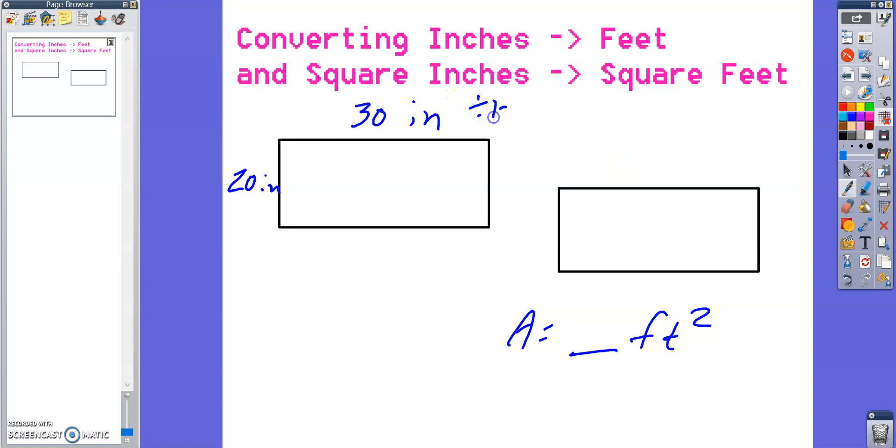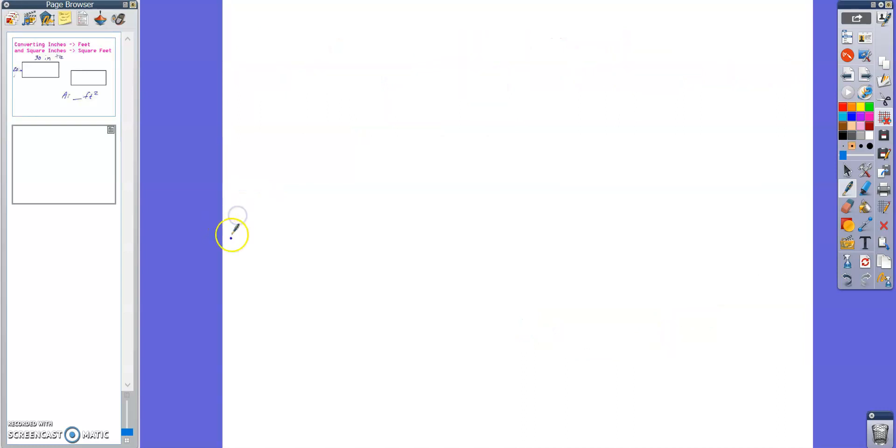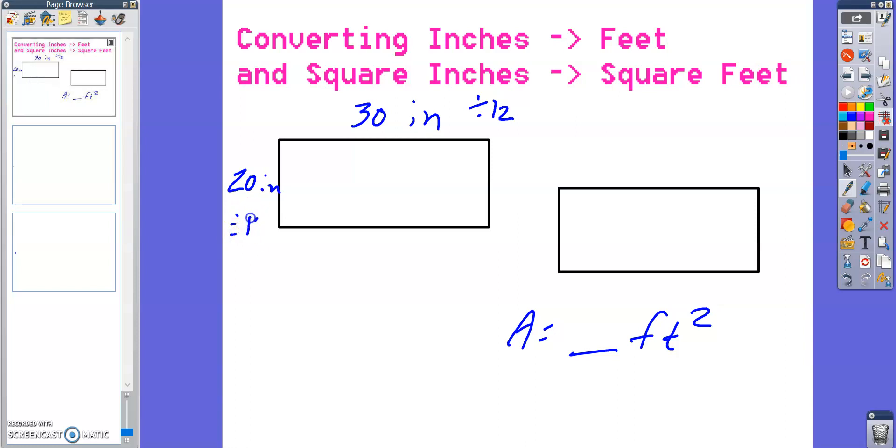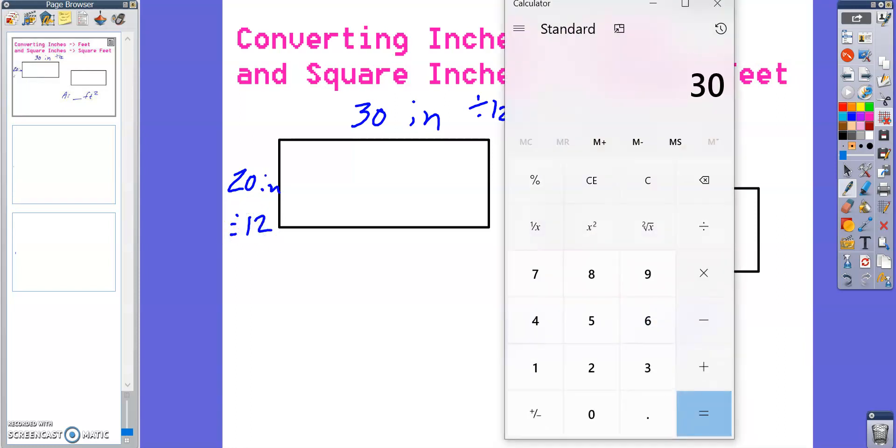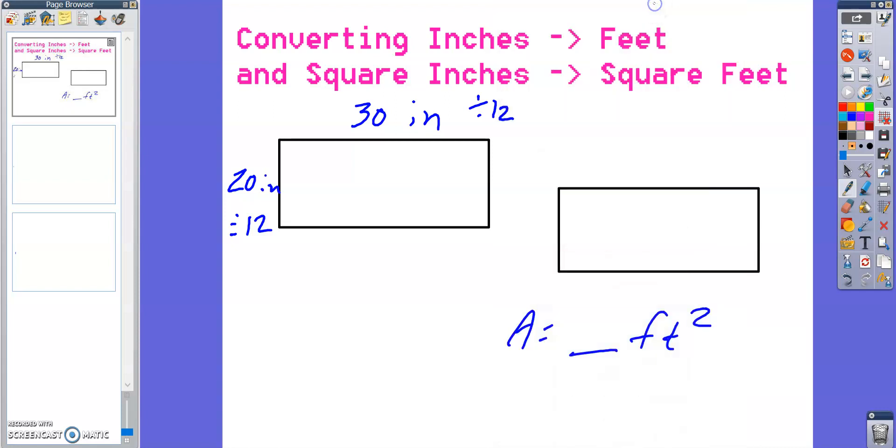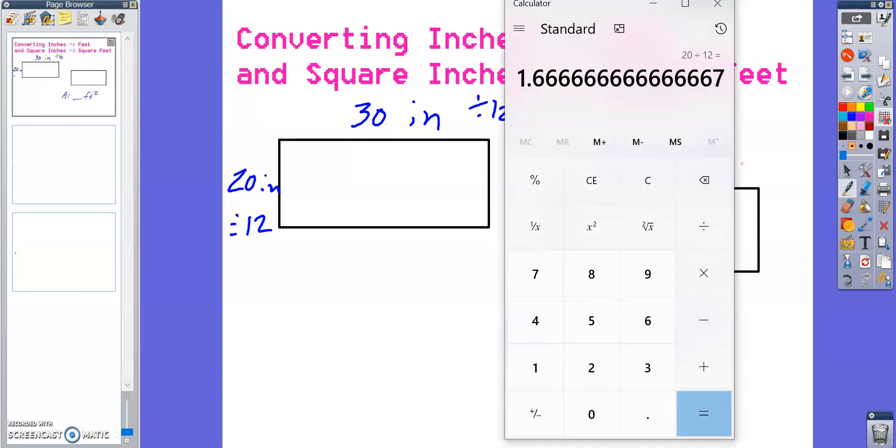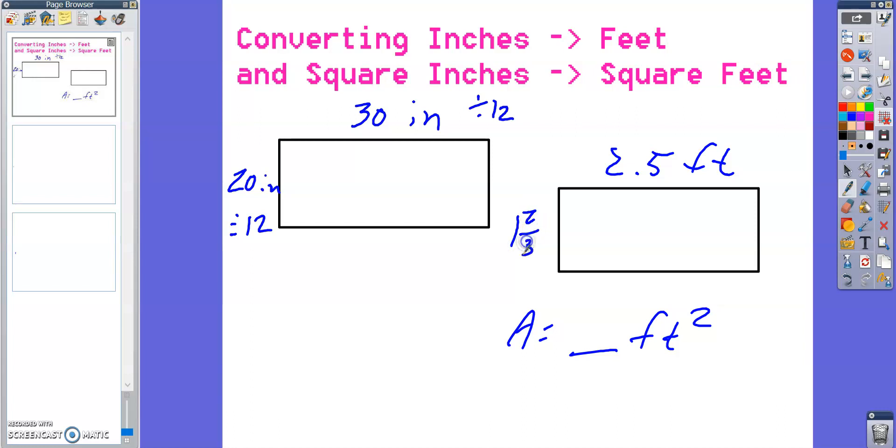So if you divide this by 12 and you divide this by 12, that would be 30 divided by 12, which is 2½ feet, 20 divided by 12, which is 1⅔ feet. Then you can multiply those and get your final area. That would be how I would do it, rather than waiting until the very end. So that's just my opinion.